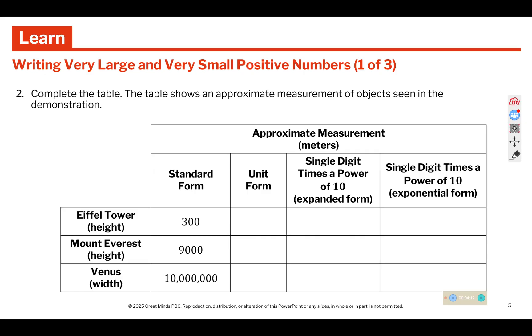It says complete the table. The table shows an approximate measurement of objects seen in the demonstration. So the unit form we would write is 300. As a single digit times the power of 10, we would have 3 times 100, or 3 times 10 times 10. But if we want it in exponential form, 100 is 10 to the second power.